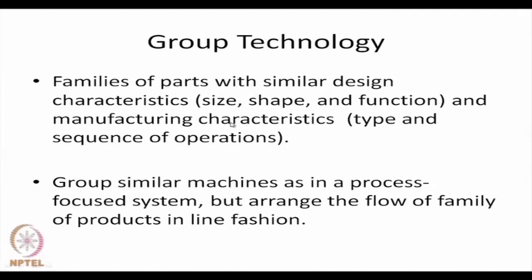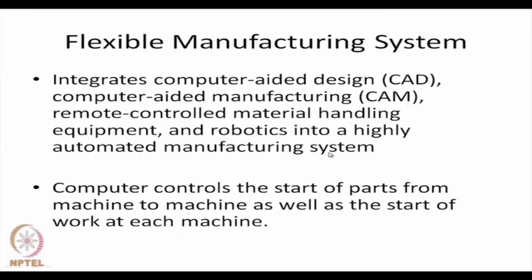Group technology is like group layout but with a key difference: machines are grouped in departments as in a process-focused system, but products flow in a line fashion. Today we also talk about flexible manufacturing systems, where computer-related design, computer-related manufacturing, remote-controlled material handling equipment, and robotics make the manufacturing system almost fully automated. Human intervention is much less during manufacturing and very high during the design, planning, and process planning stages. The computer controls the movement of parts from machine to machine as well as the start of work at each machine.